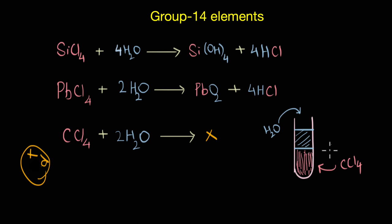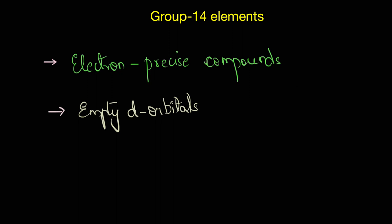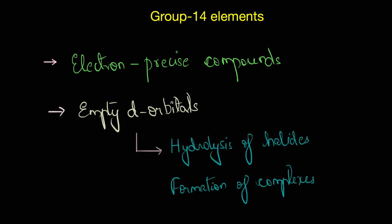So to summarize what all did we discuss in this video: we saw that the group 14 elements form electron precise compounds, that means the central atom in a molecule has exactly or precisely 8 electrons around it. We also saw that because of the presence of d orbitals, certain elements in the group 14 are able to expand their valency beyond 4, and as a result the halides of these elements are able to undergo hydrolysis reaction and also form complexes by accepting electron pairs from electron rich species.